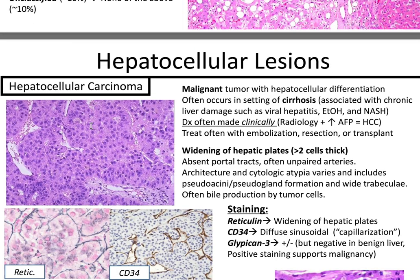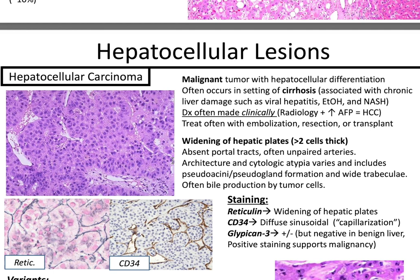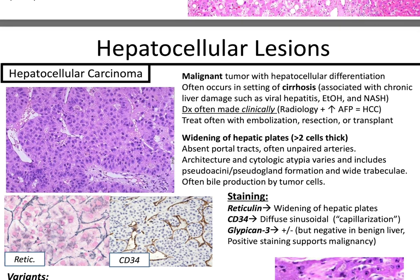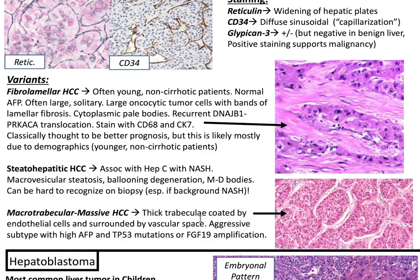Hepatocellular carcinoma: malignant tumor often in the setting of cirrhosis. You'll have widening of hepatic plates greater than two cells thick, better seen with reticulin staining. CD34 shows diffuse sinusoidal staining. Glypican-3 is positive or negative but negative in benign liver, and positive staining supports malignancy. Variants include fibrolamellar HCC in young non-cirrhotic patients, staining with CD68 and CK7; steatohepatitic HCC; and macrotrabecular massive HCC.